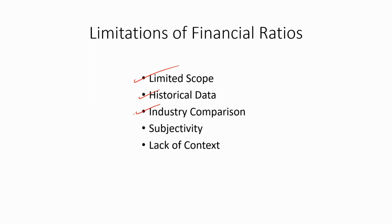Industry comparison. Financial ratios are often used to compare the financial performance of a company with other companies in the same industry. However, industries can differ significantly in terms of business models, competitive landscape and regulatory environments. This makes it difficult to draw meaningful comparisons between companies in different industries.